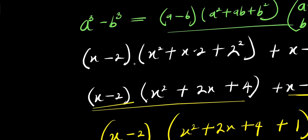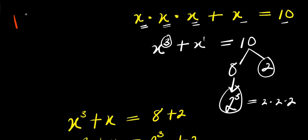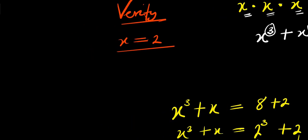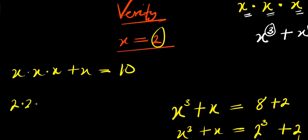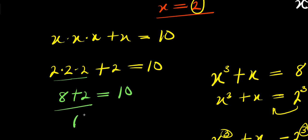The next step would be to verify by inserting the value x equals 2. So x times x times x plus x equals 10, with x equals 2: 2 times 2 times 2 plus 2 equals 10. 2 times 2 is 4, times 2 is 8, plus 2 equals 10. And 8 plus 2 is 10 equals 10.